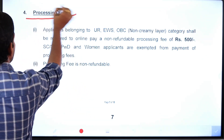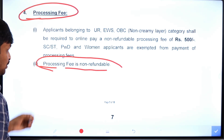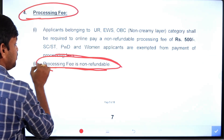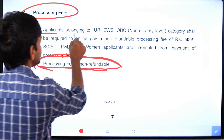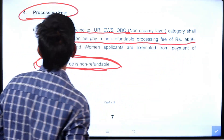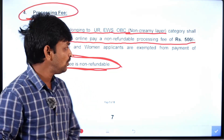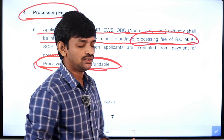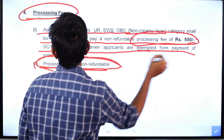Now, the application fees details. If you look at the application fees, they are non-refundable. Applicants belonging to the unreserved, Economically Weaker Section, and OBC non-creamy layer categories are required to pay a non-refundable processing fee of 500 rupees. SC, ST, Persons with Disabilities, and Women applicants are exempted from payment of processing fees.